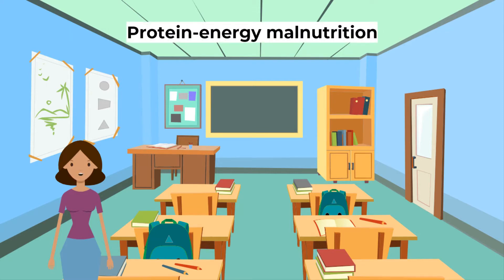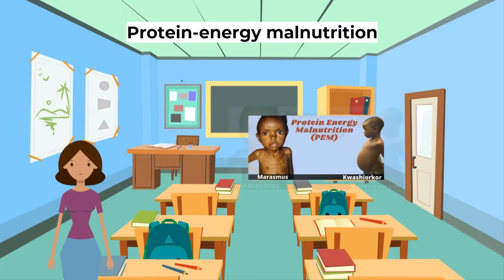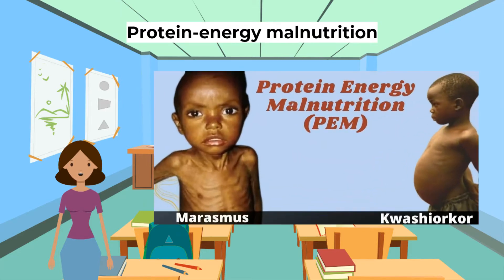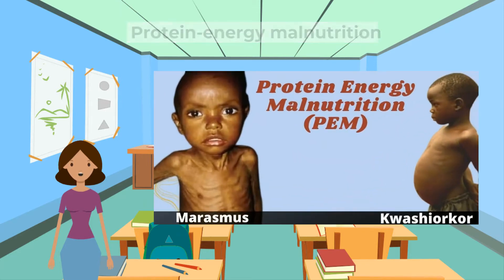Protein energy malnutrition is very typical. This is a lack of glucose and proteins in food, and can be lethal because energy is vital for life. It can lead to kwashiorkor, whose symptoms are an enlarged liver, thinning hair, and a distended or swollen abdomen.